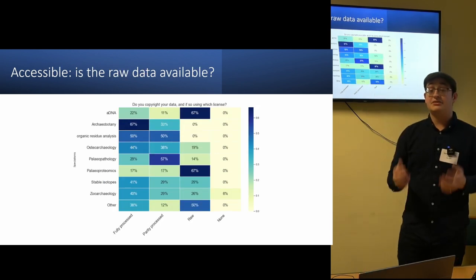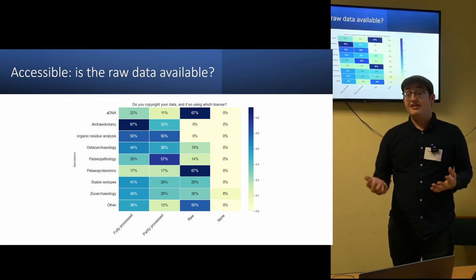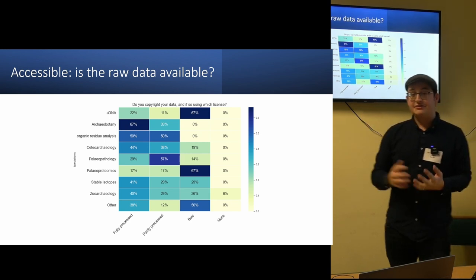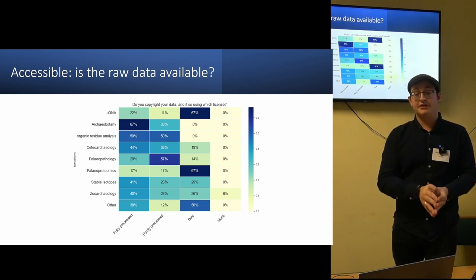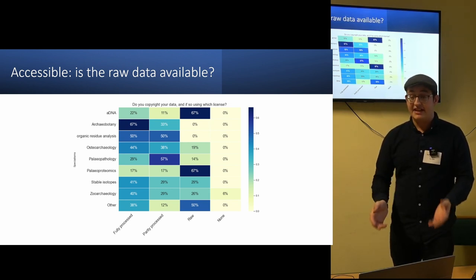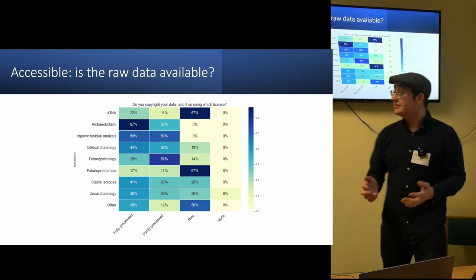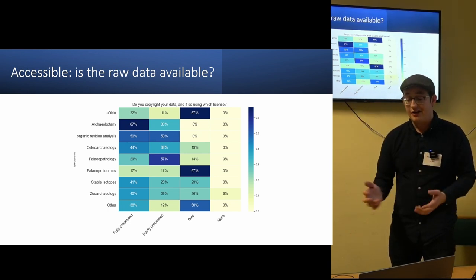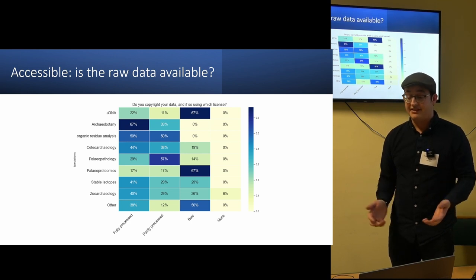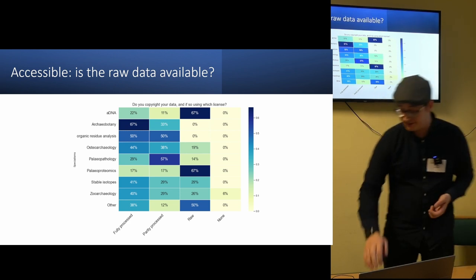In terms of whether the actual raw data is available, you can see that the majority of the data is shared fully processed, which is not really good, because the less it is processed, the easier it is to reuse the data. And so if it is raw, you can actually access and reuse it in a lot more different ways. However, seeing as more of the data is being shared fully processed, it's not going to be open to as many ways of reusability as possible. So we need to make sure that the raw data is accessible in the future.